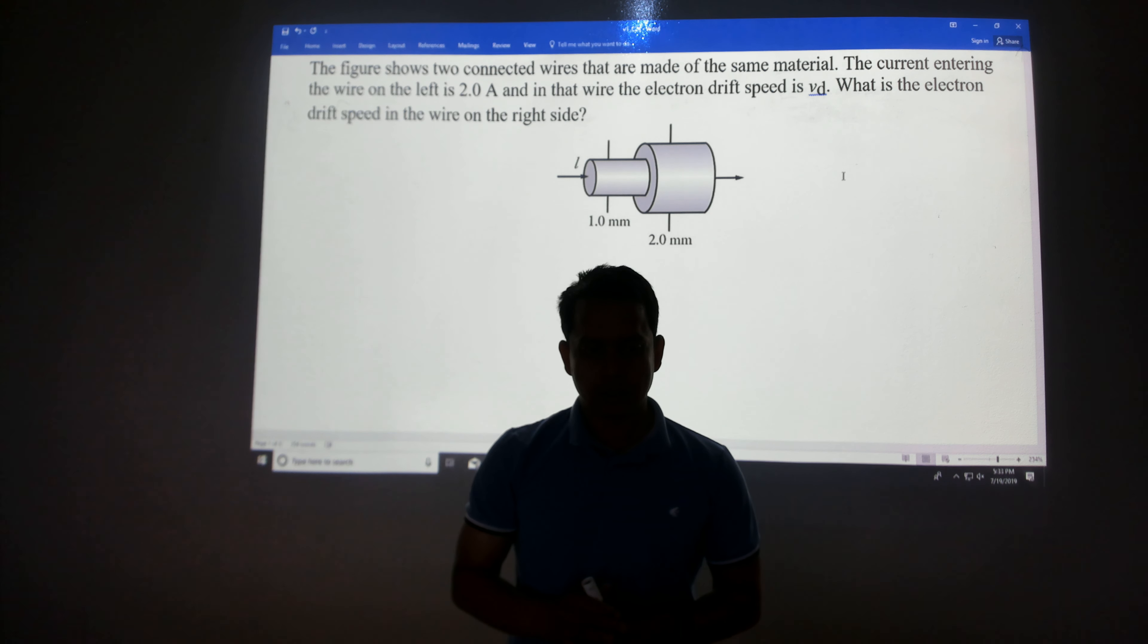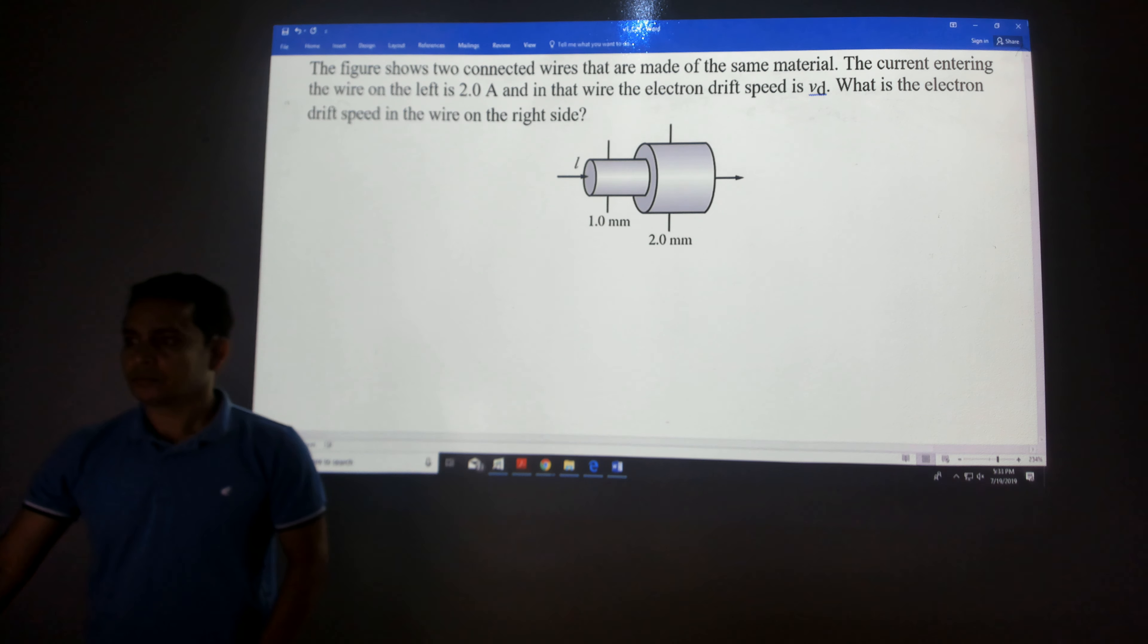In this problem you have two wires that are connected. The diameter for this wire is 1 millimeter and this is 2 millimeters, but both wires are made of the same material. The current is 2 ampere which enters on this side, and the drift velocity is given which is Vd.